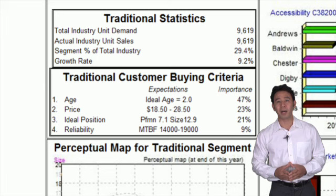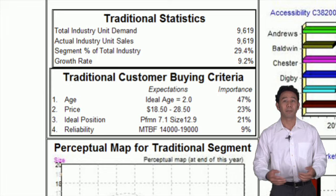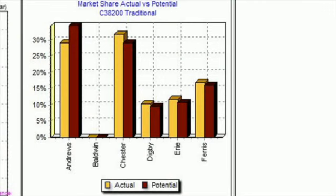Now let's look beyond buying criteria. What about having multiple products in a segment? In other words, product extenders. Looking at the market share actual versus potential chart, we see that Andrews and Chester dominate the market. How are they doing it? One explanation is they have excellent products. Another is that they have two products in the same segment.